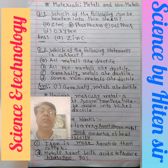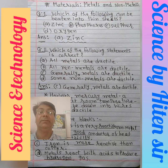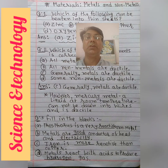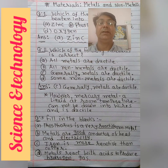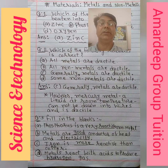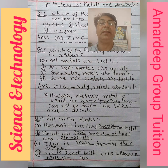Which of the following statements is correct? We have four options. First option: all metals are ductile. Second option: all non-metals are ductile.